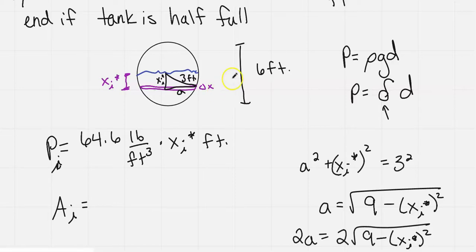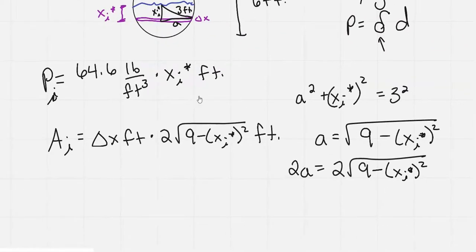So the area of my rectangular slice would be delta x feet times 2 times the square root of 9 minus x sub i star squared feet. And so I have the square footage of that rectangle.